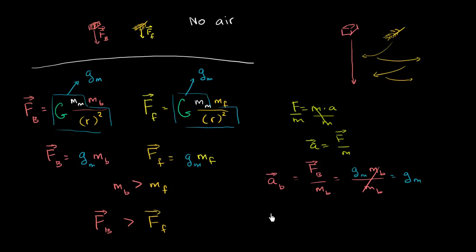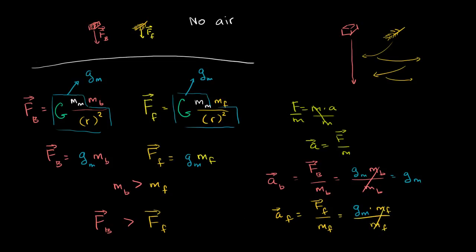Now let's do the same for the feather. The acceleration of the feather equals the force on the feather divided by the mass of the feather. The force is g sub m times the mass of the feather, divided by the mass of the feather — which again cancels. So its acceleration is also g sub m. They both accelerate at the same rate downward and hit the ground at the exact same time.